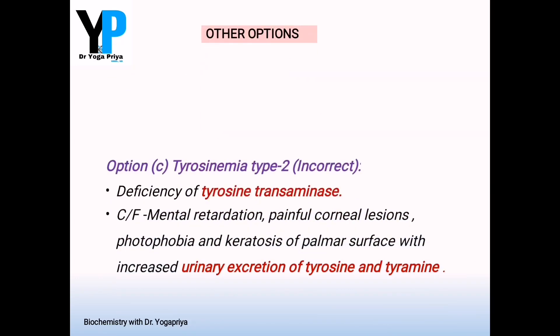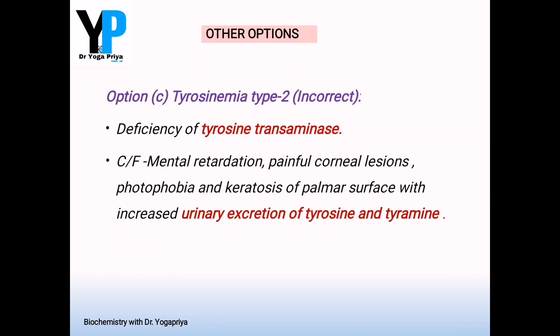Option C is tyrosinemia type 2, mainly due to deficiency of the enzyme tyrosine transaminase. Clinical manifestations include mental retardation and eye features, with increased urinary excretion of tyrosine and tyramine. Because mental retardation is seen in tyrosinemia type 2 but not reported in alkaptonuria, Option C is also ruled out.